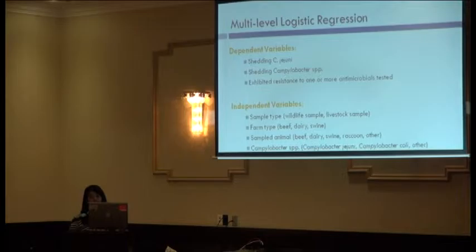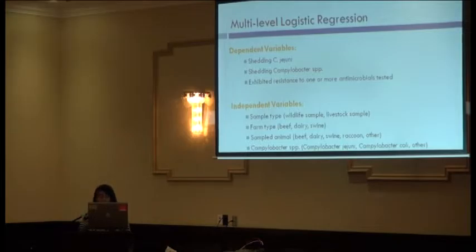We looked at antimicrobial resistance, assessing associations between sample type and exhibited resistance to one or more antimicrobials tested, as well as with sampled animal and farm type. Uniquely, we wanted to see if Campylobacter species influenced antimicrobial resistance prevalence—whether C. jejuni was more likely to be resistant than C. coli.